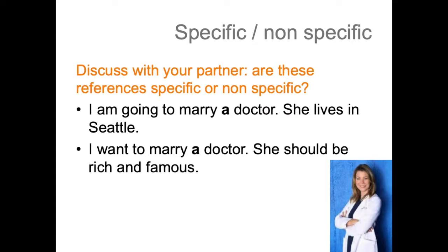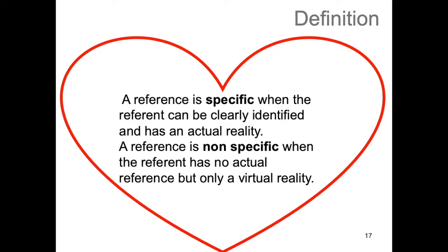Something important to know is that non-specific reference belongs to imaginary or virtual reality. You will find space builders, which typically open a space for virtual reality for non-specific reference, like non-affirmative constructions, yes-or-no questions, negations, imperatives, conditionals, and constructions involving modal verbs or verbs of want, need, or desire. What these constructions have in common is that the speaker signals she does not make any claims about the factual existence of a referent, but only sees it as having virtual existence. A reference is specific when the referent can be clearly identified and has an actual reality. It is non-specific when the reference has no actual referent, but only a virtual reality.